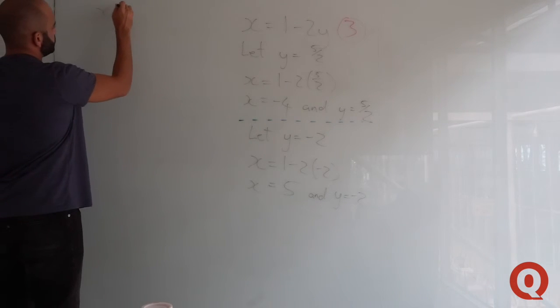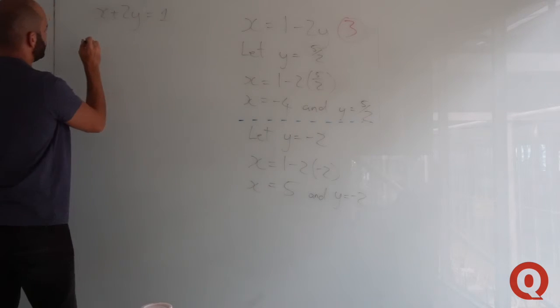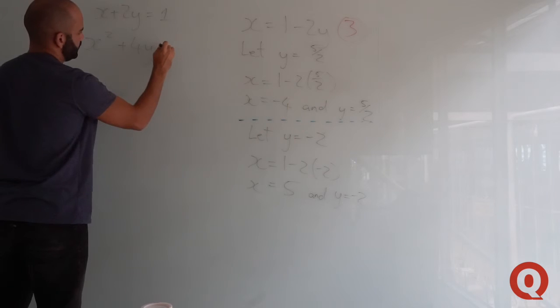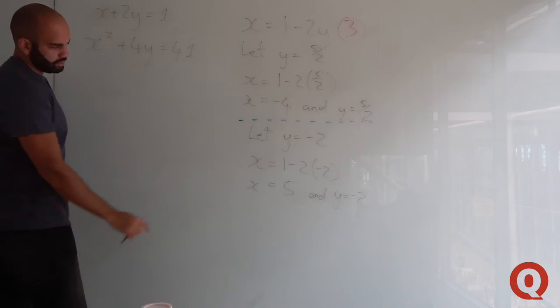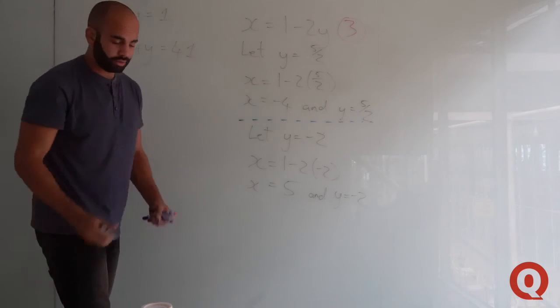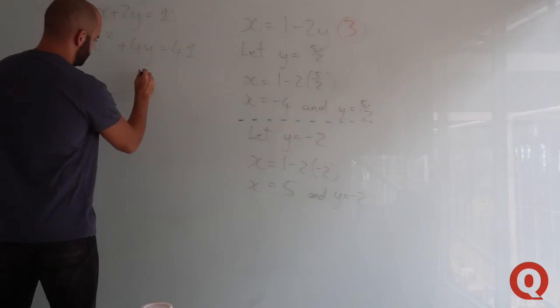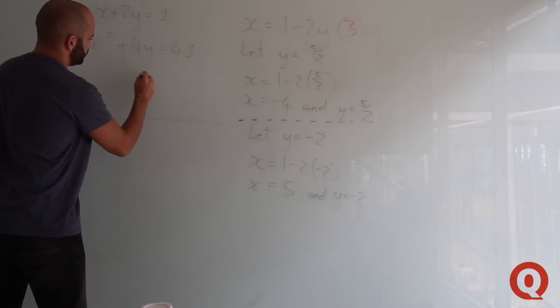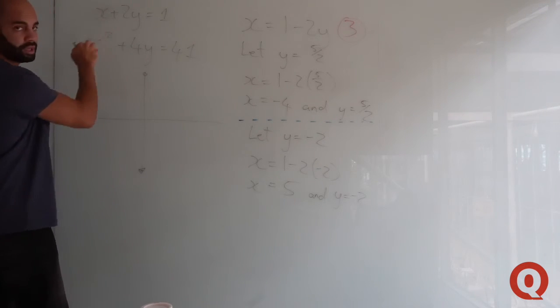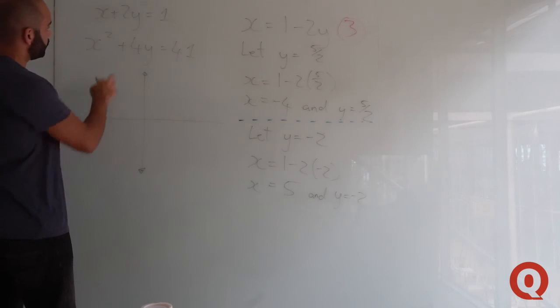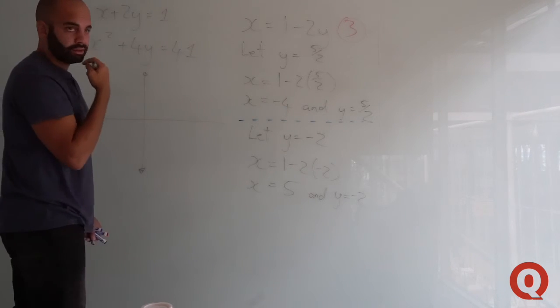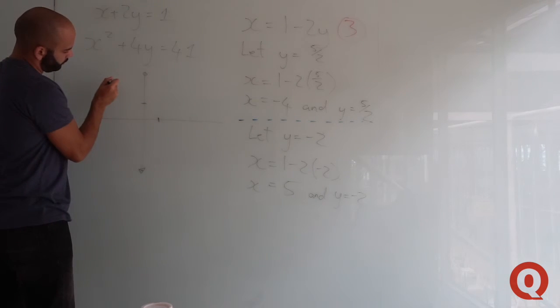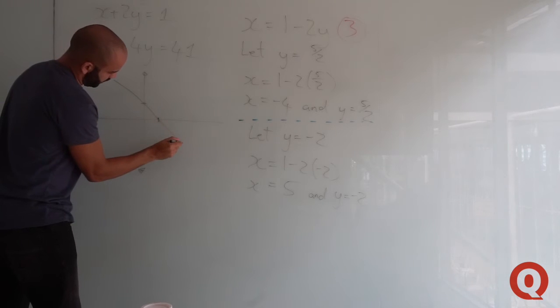If you had these two equations, x plus 2y equals 1 and x squared plus 4y squared equals 41, these two solutions represent two intersection points between these equations. This linear one would be a negative gradient.